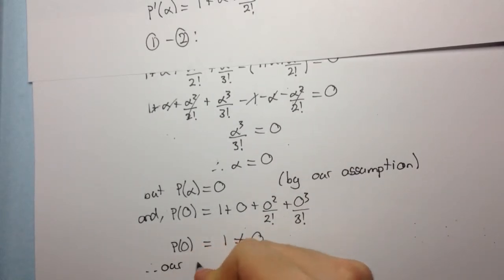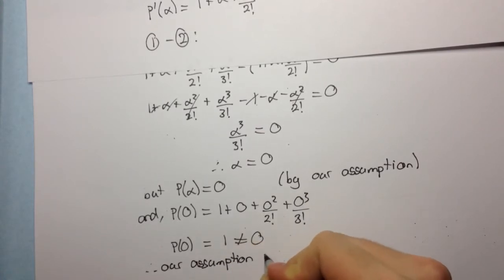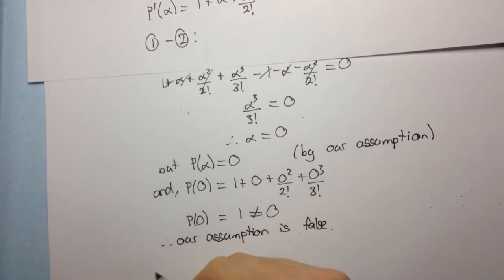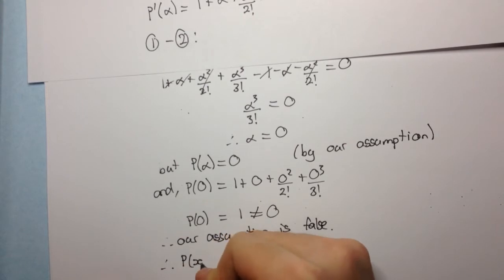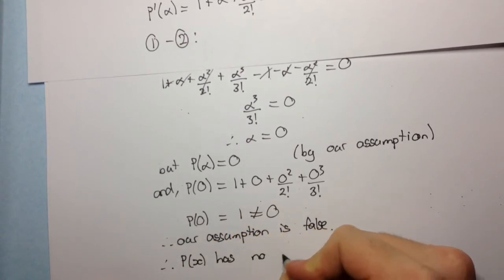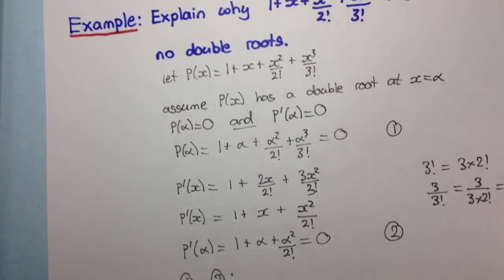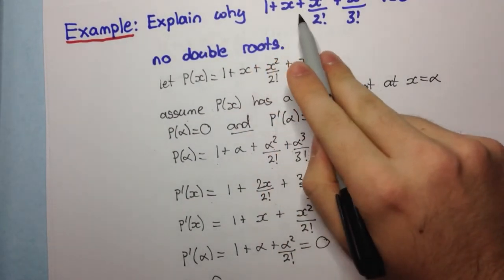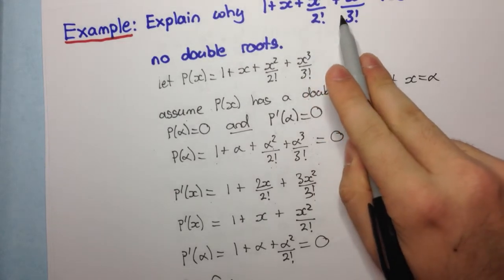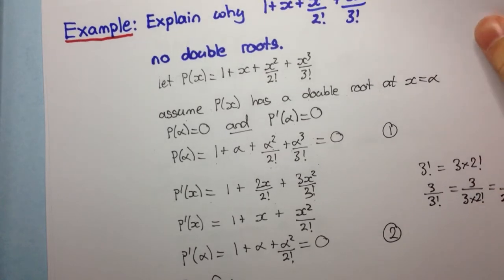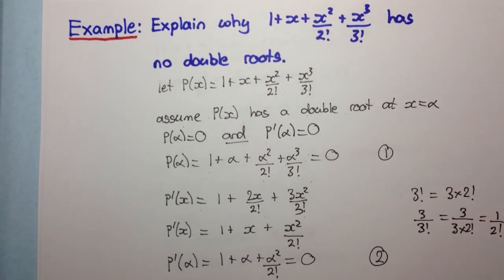But p of 0 equals 1, and that's not equal to 0 as required. Therefore our assumption is false, and so therefore p of x has no double roots. That's the end of the question. We've proven that 1 plus x plus x squared over 2 factorial plus x cubed over 3 factorial has no double roots, and the method we used was a proof by contradiction.